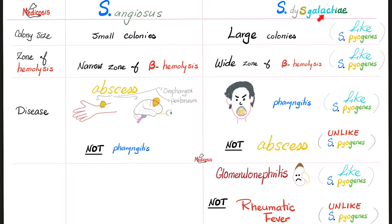Now let's compare Streptococcus dysgalactiae and Streptococcus pyogenes. Dysgalactiae has large colonies — just like pyogenes, similar. Wide zone of hemolysis — just like pyogenes, similar. Causing pharyngitis — just like pyogenes, similar. However, Streptococcus dysgalactiae can trigger glomerulonephritis just like pyogenes. However, Streptococcus dysgalactiae can never cause rheumatic fever, unlike Streptococcus pyogenes, which can lead to rheumatic fever.